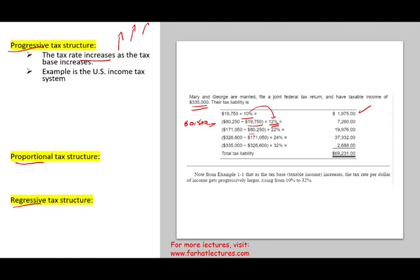So the next $60,500, they will pay 12%. So notice the rate went up by 2%, went from 10% to 12%. Then every extra dollar they earn above $80,250 up to $170,050, you can compute the bracket here. They will pay, then it goes up 10%. Notice it's progressive. And this will amount to $19,976. Any amount they earn above $170,150 up to $326,600, they will pay 24%. And any amount from $326,600 up to $335,000, they'll be in the 32% tax bracket.